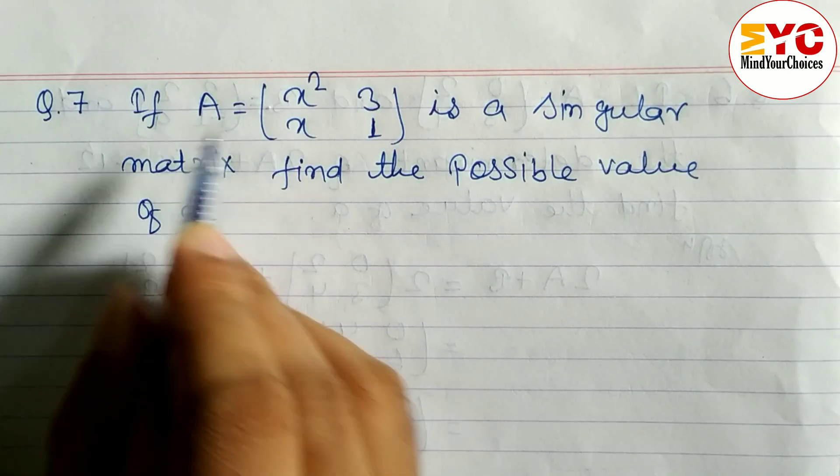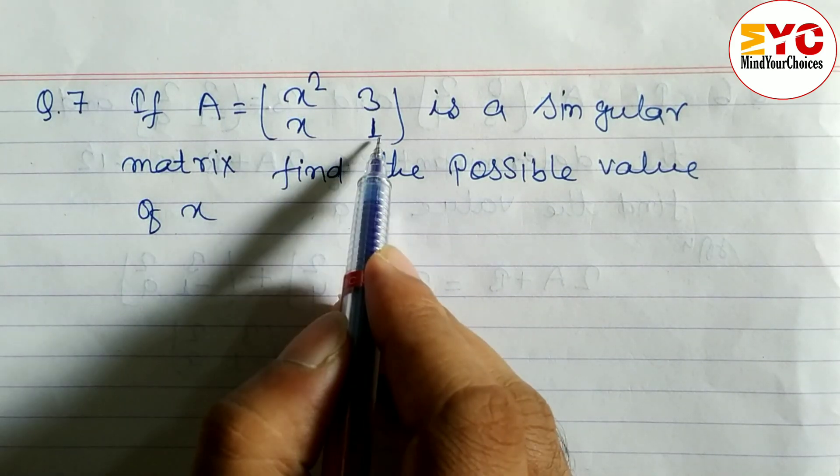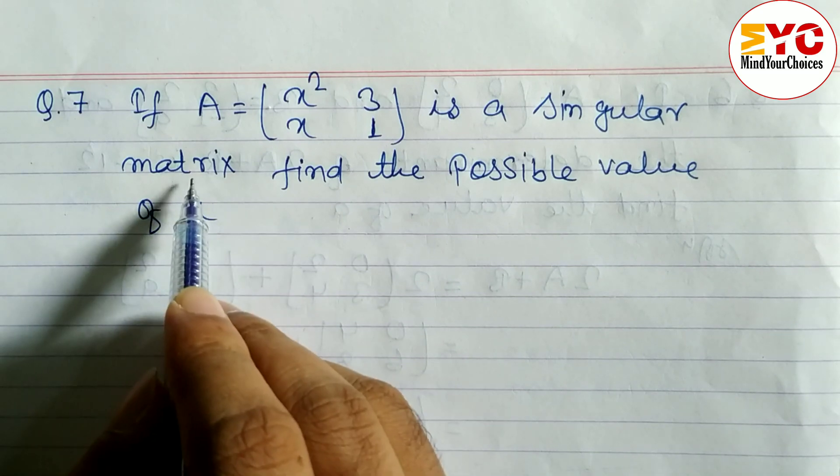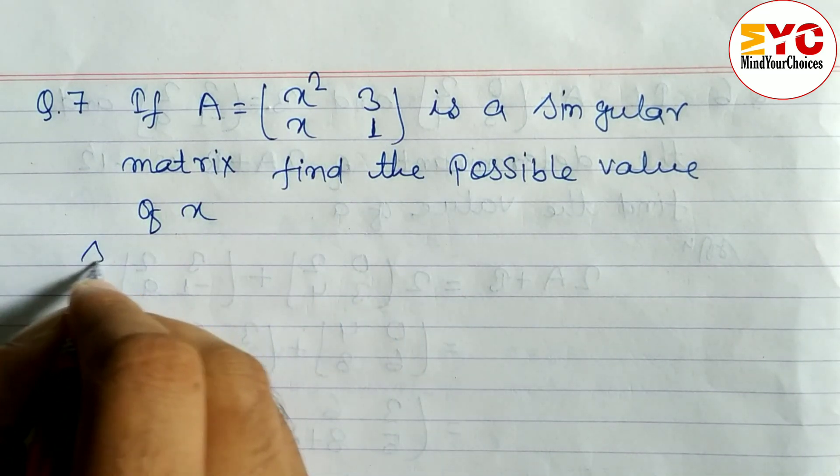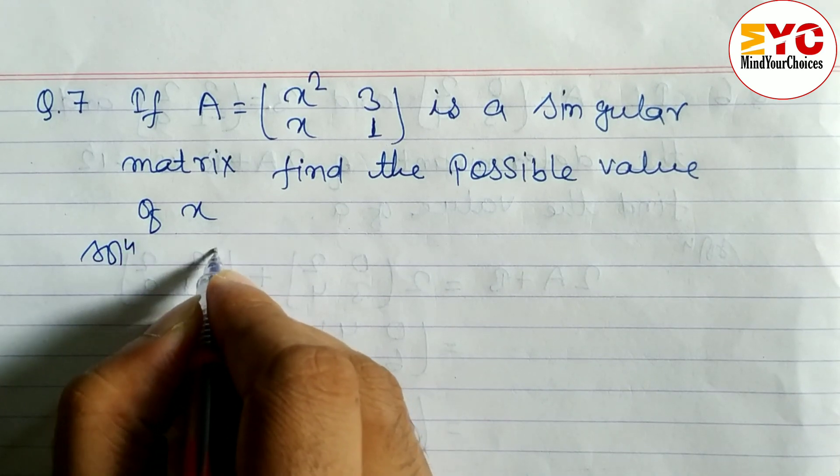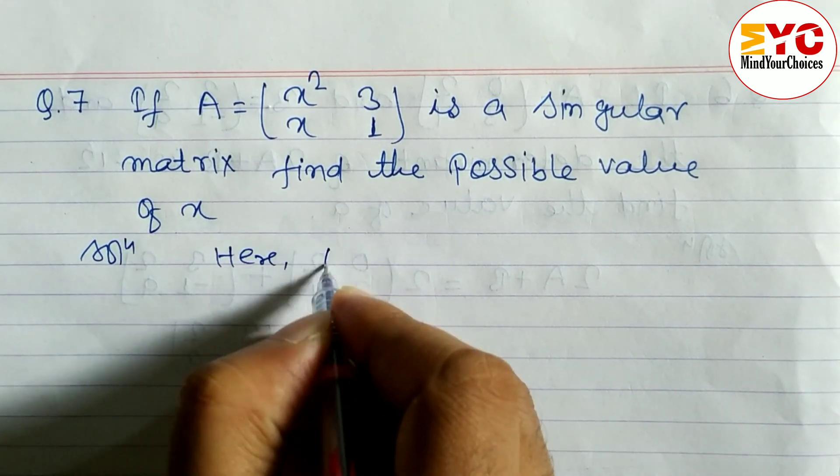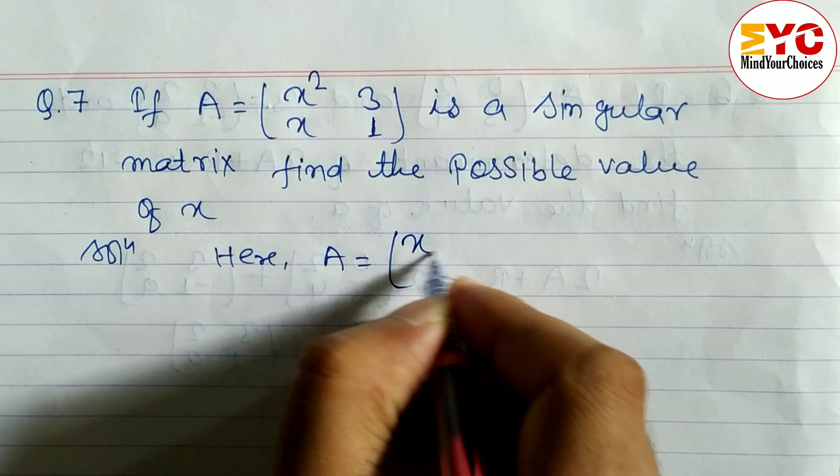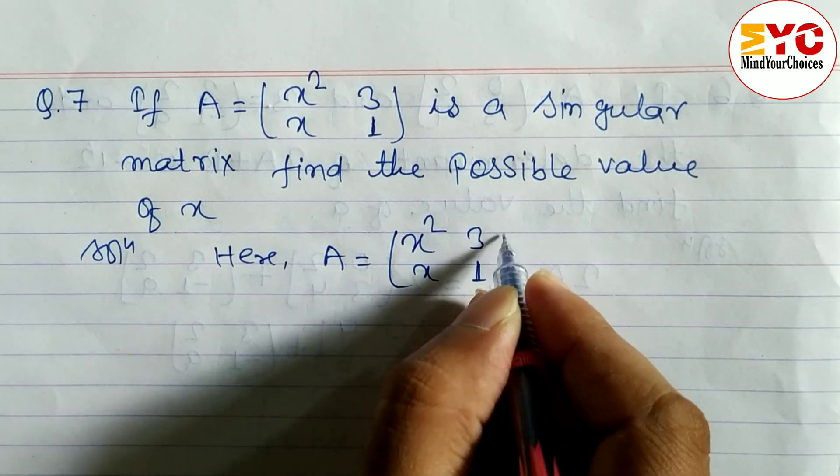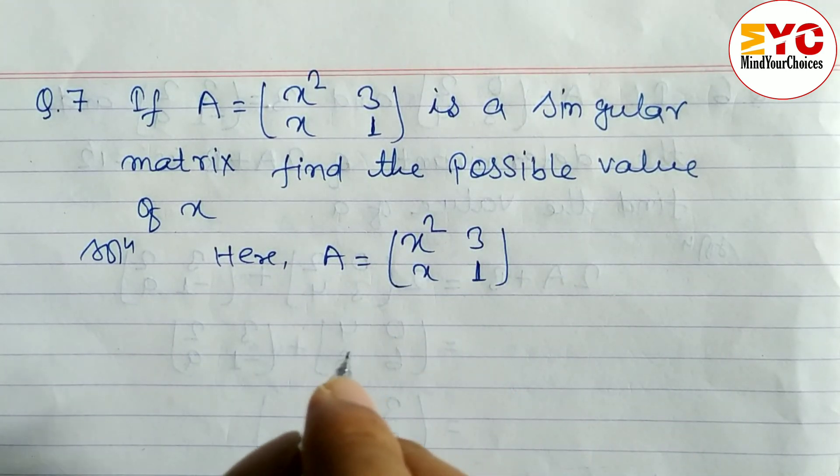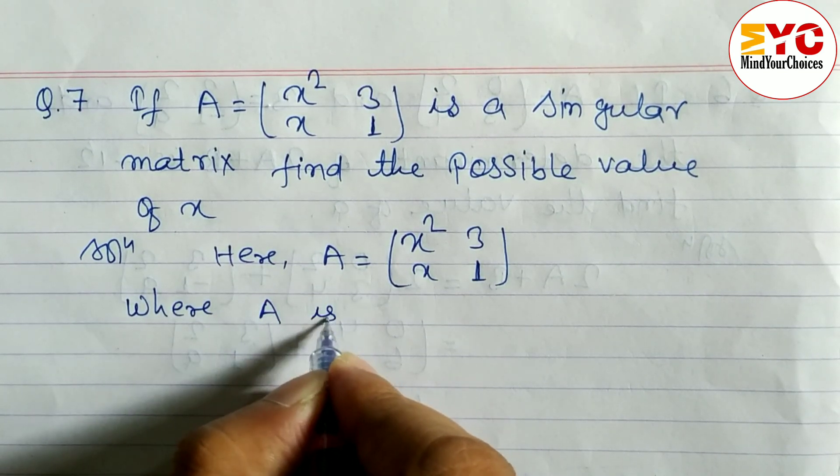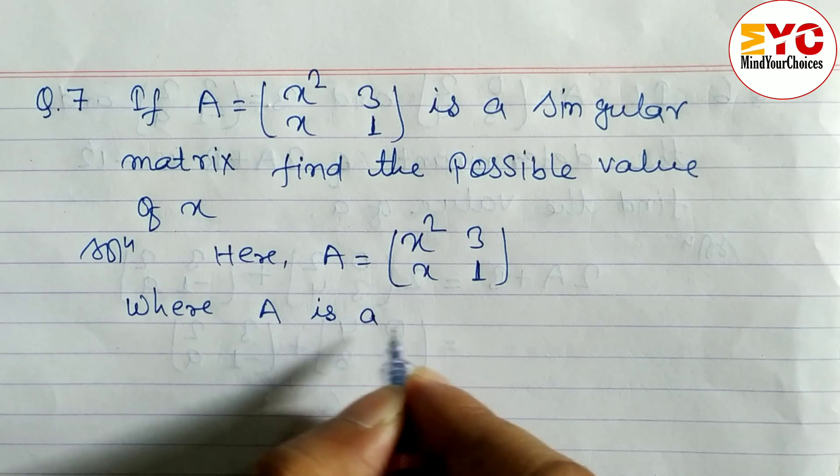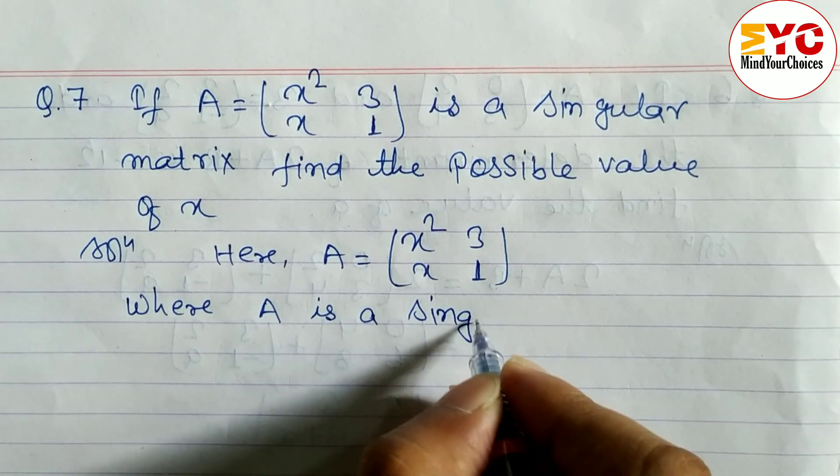Here we have a question: If A equals the matrix [x² 3; x 1] is a singular matrix, find the possible value of x. Here, matrix A equals [x² 3; x 1], which is a singular matrix as given in the question.